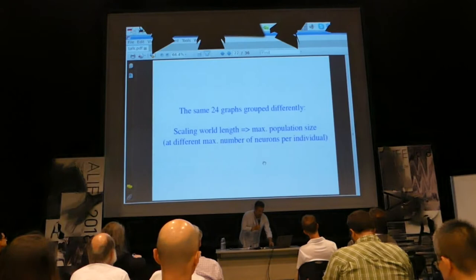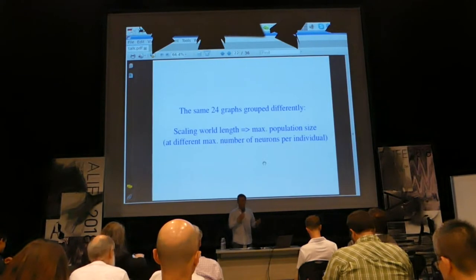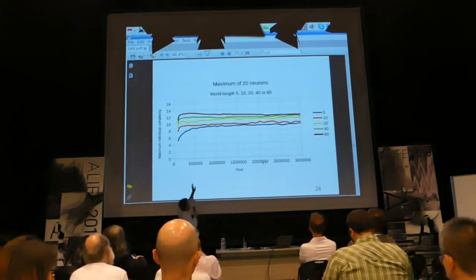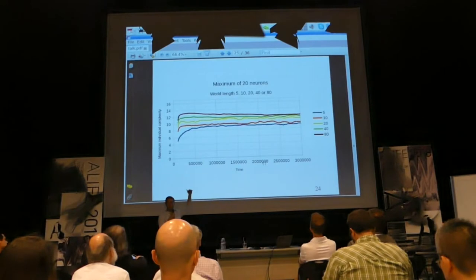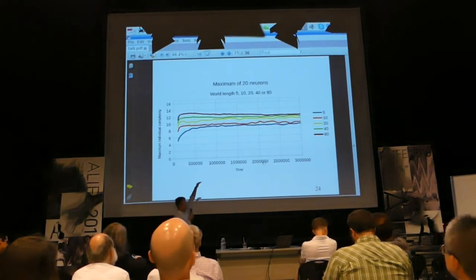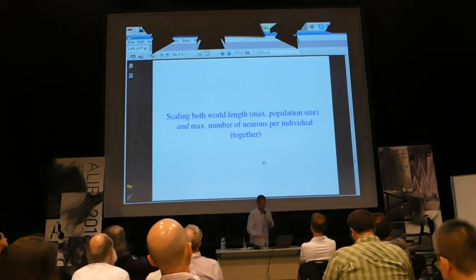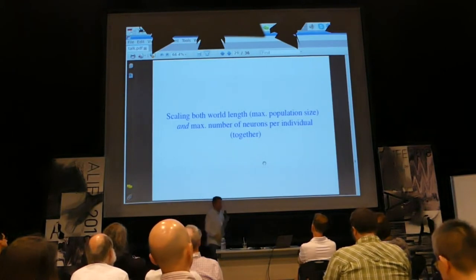You can present exactly the same curves grouped differently, imagining you're instead increasing the world size while keeping the maximum number of neurons constant. With just 20 neurons you can go for bigger and bigger worlds, and again you find that the complexity appears to be bounded asymptotically. The interesting thing comes if you increase the two together: you're increasing what agents should be able to do because they have more neural capacity, and you're increasing the space in which they can do things so there are more challenges. At that point we begin to see some indication that maybe this system is continuing to scale.